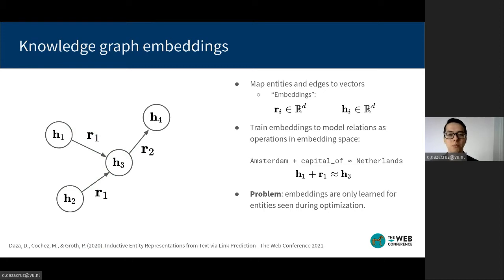Since there are no embeddings for them, in the worst case, this would require rerunning the optimization algorithm. The consequences are of particular importance given the dynamic nature of knowledge graphs in real life.